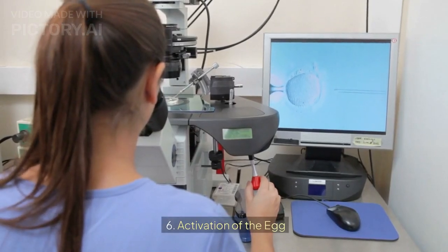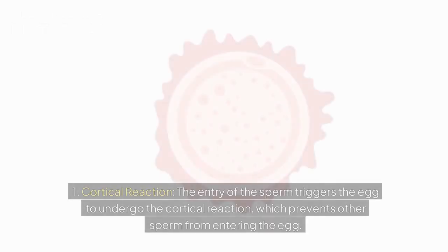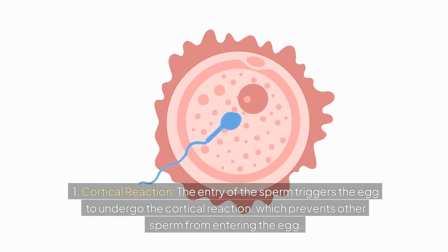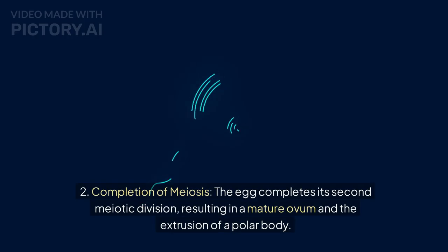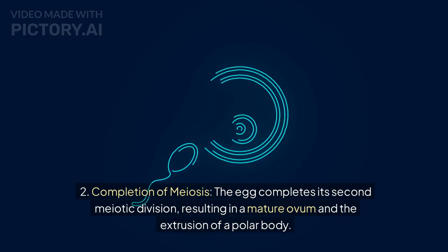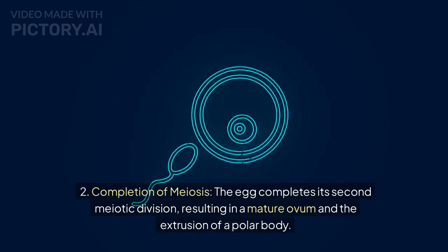Activation of the egg. The entry of the sperm triggers the egg to undergo the cortical reaction, which prevents other sperm from entering the egg. The egg then completes its second meiotic division, resulting in a mature ovum and the extrusion of a polar body.